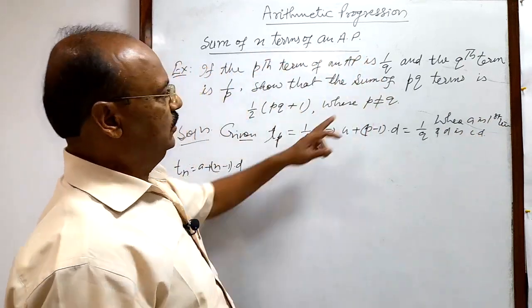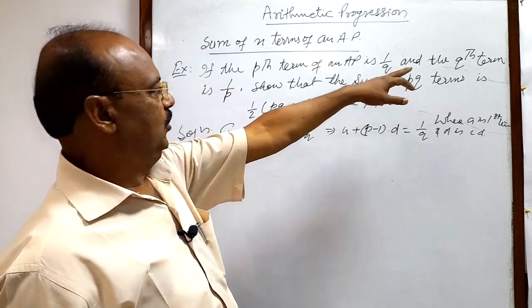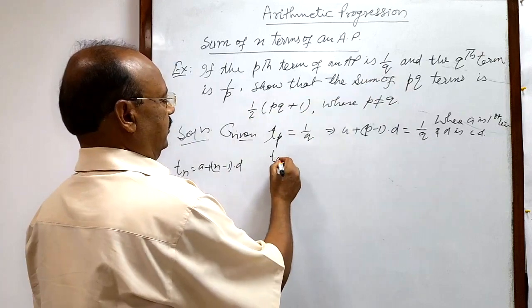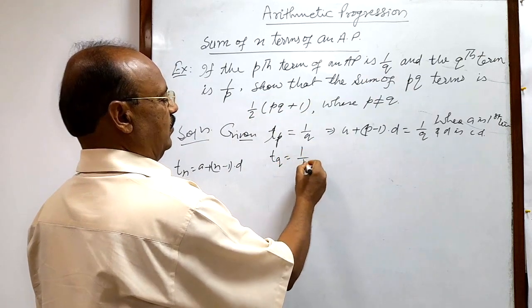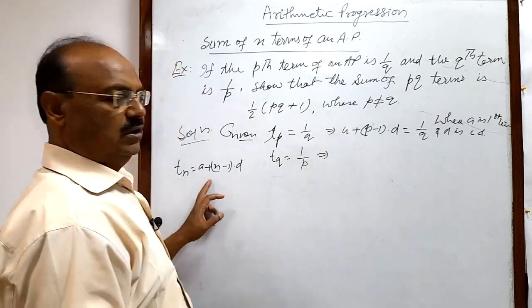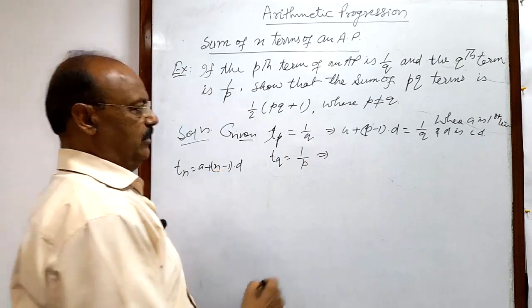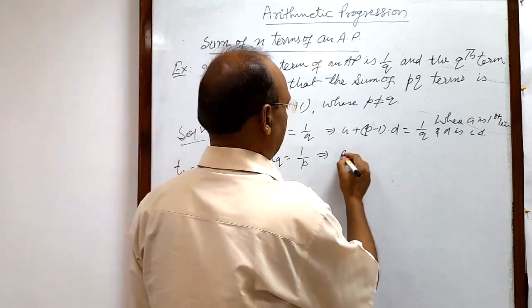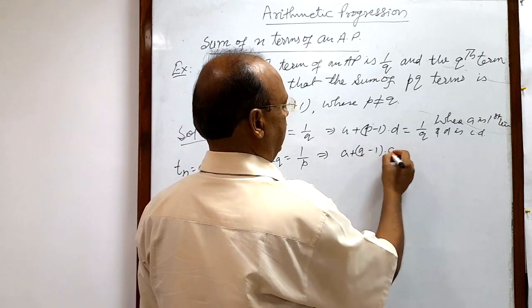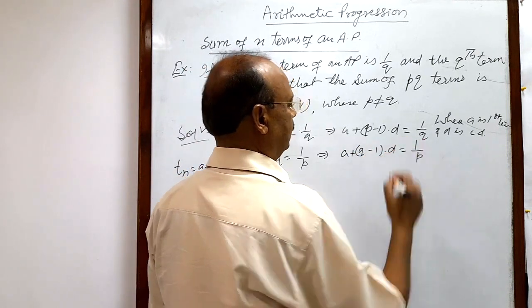Also given that the qth term is 1/p. By the same formula, the qth term is a + (q − 1)d. So: a + (q − 1)d = 1/p. ... (equation 2)